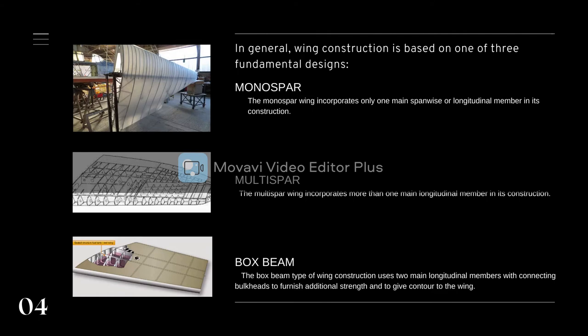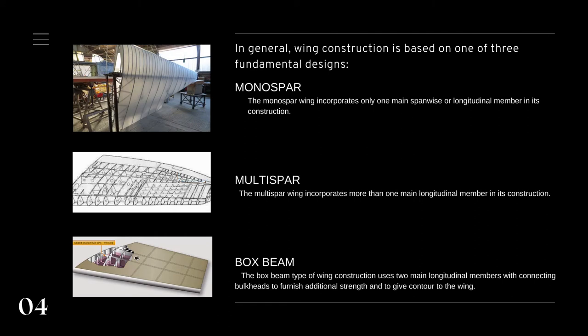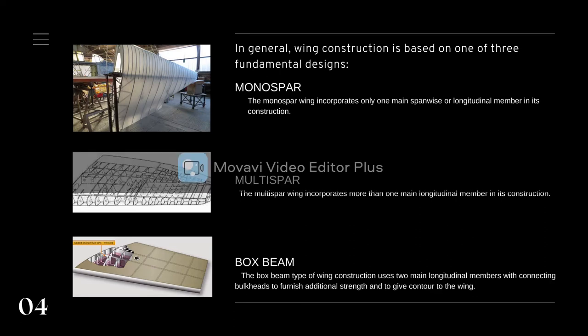The multi spar wing, on the other hand, incorporates more than one main longitudinal member in its construction. Ribs or bulkheads are also used to provide contour or shape to the airfoil. This type of design gives the equivalent overall strength of the wing, but since the design has multiple smaller spars, it results in a thinner wing or tail structure.